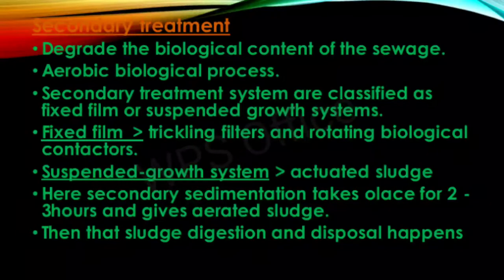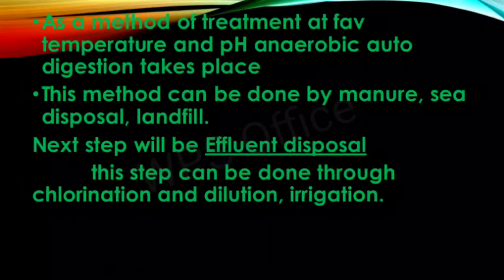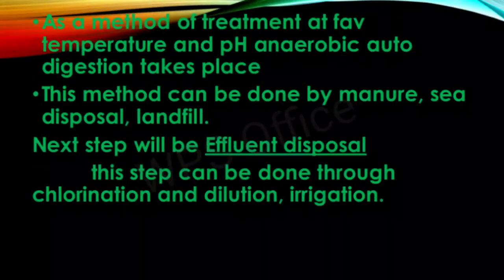Secondary treatment involves degradation of the biological content of sewage through aerobic biological processes. Secondary treatment systems are classified as fixed film and suspended growth systems. Fixed film systems include trickling filters and rotating biological contactors. Suspended growth systems use activated sludge — a secondary sedimentation process takes place for two to three hours, producing sludge. Sludge digestion and disposal occurs at favorable temperature and pH, using anaerobic autodigestion — disposable by manure, sea disposal, or landfill. Effluent disposal can then be done through chlorination, dilution, or irrigation.